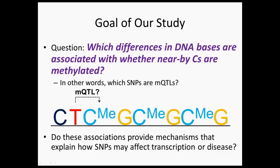Once we have answered that question we can investigate the following follow-up question: do these associations provide mechanisms that explain how SNPs may affect transcription or disease? Many SNPs have been shown to be associated with transcription and disease, but the mechanism through which these SNPs influence transcription or disease is not known. Because affecting methylation can directly affect transcription, finding that a SNP associated with transcription is also associated with methylation provides a potential mechanism through which that SNP influences transcription.